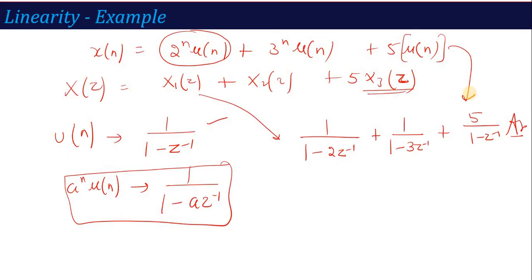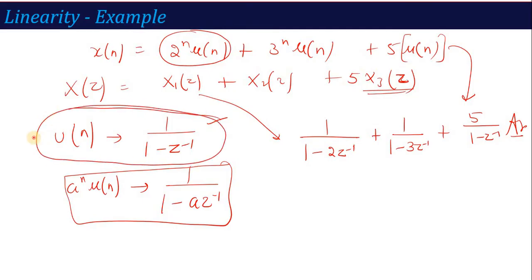See how easily we calculated the Z-transform of the given question by comparing it to the standard signal — if you remember the Z-transform of these standard signals, and especially if you remember the Z-transform of u(n), you can easily calculate this question. This is the example of linearity property — where linearity needs to be applied.